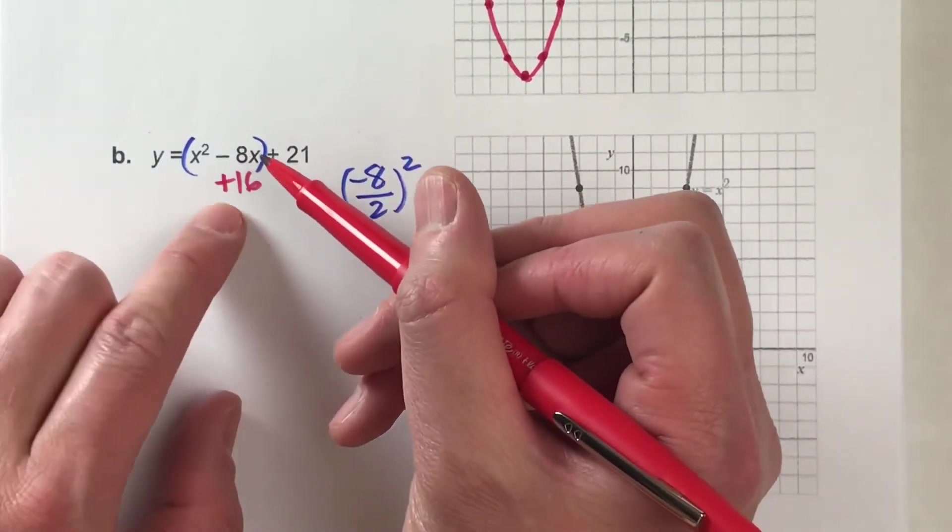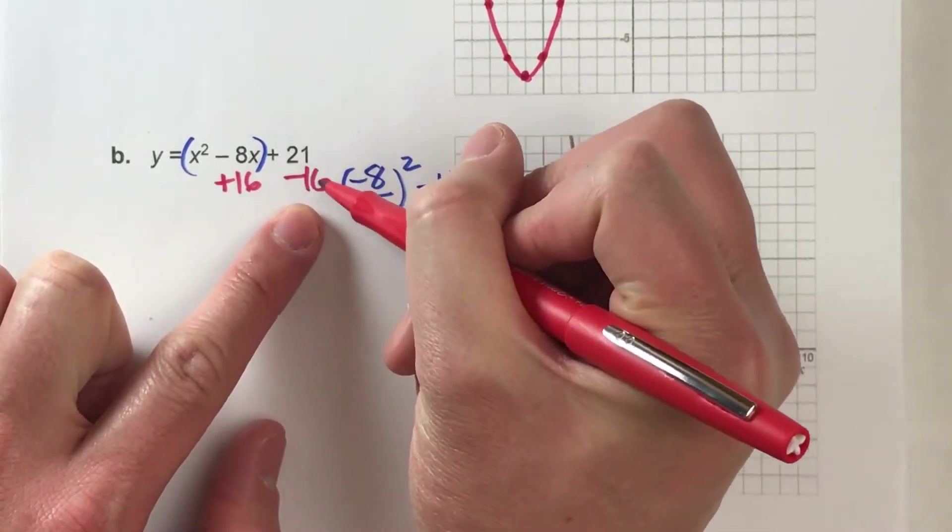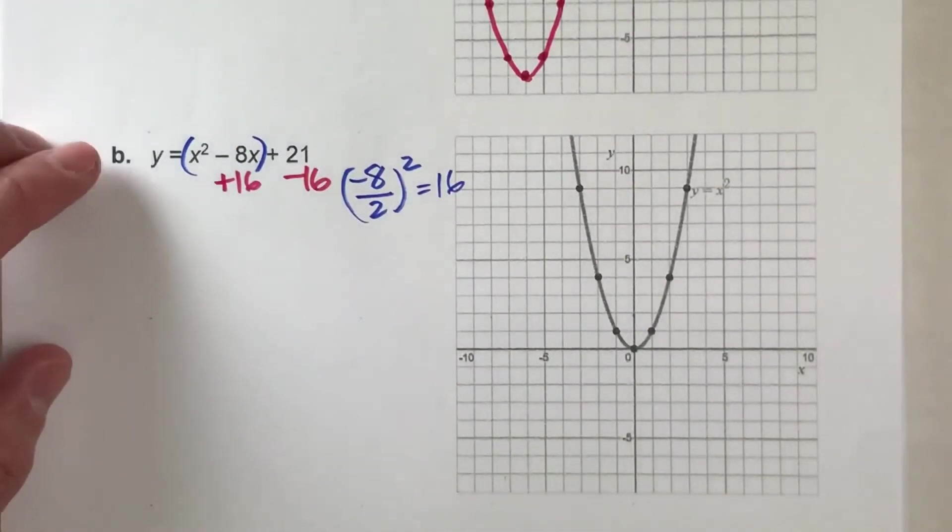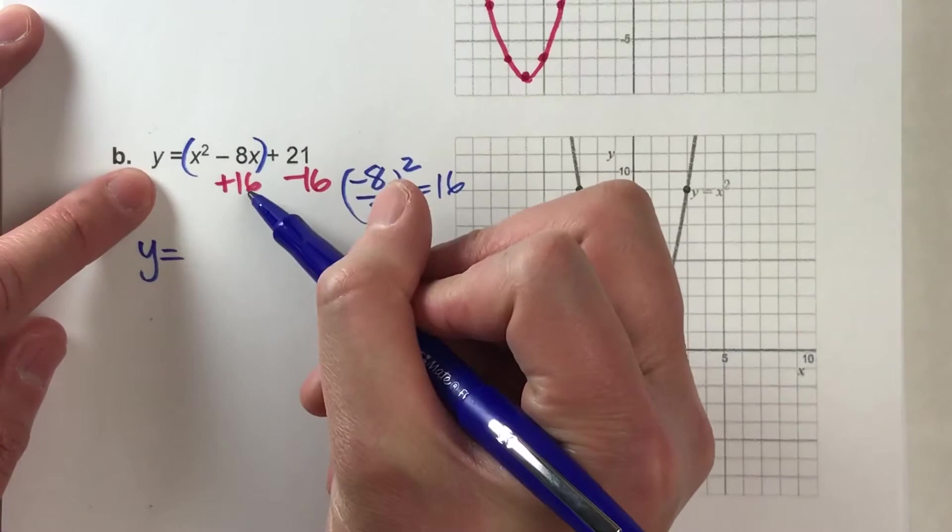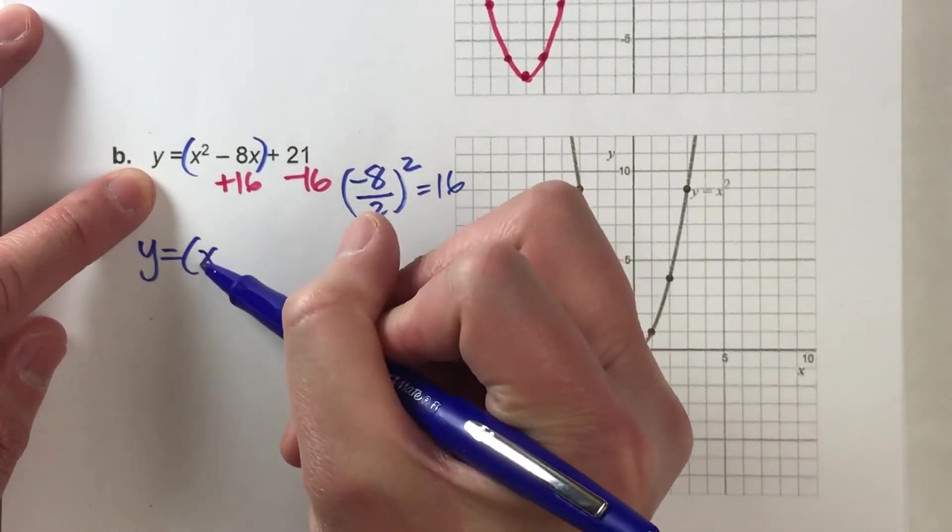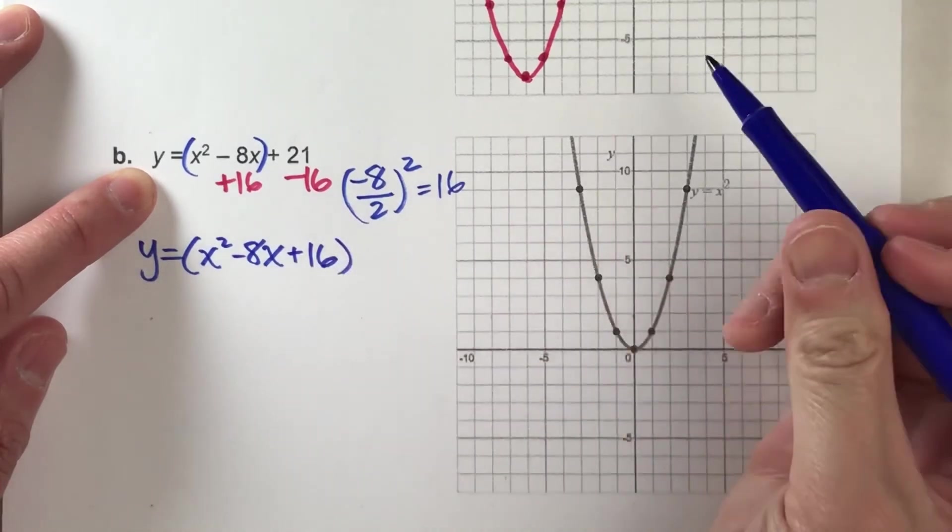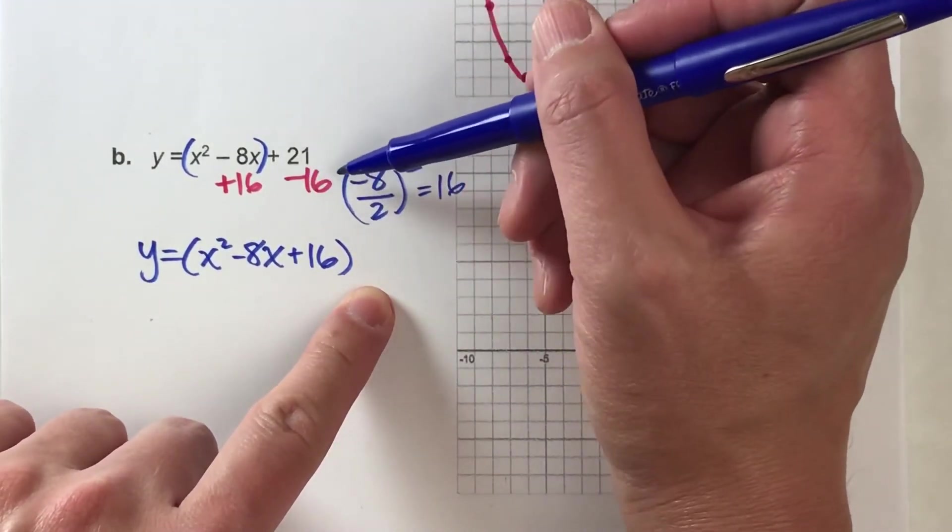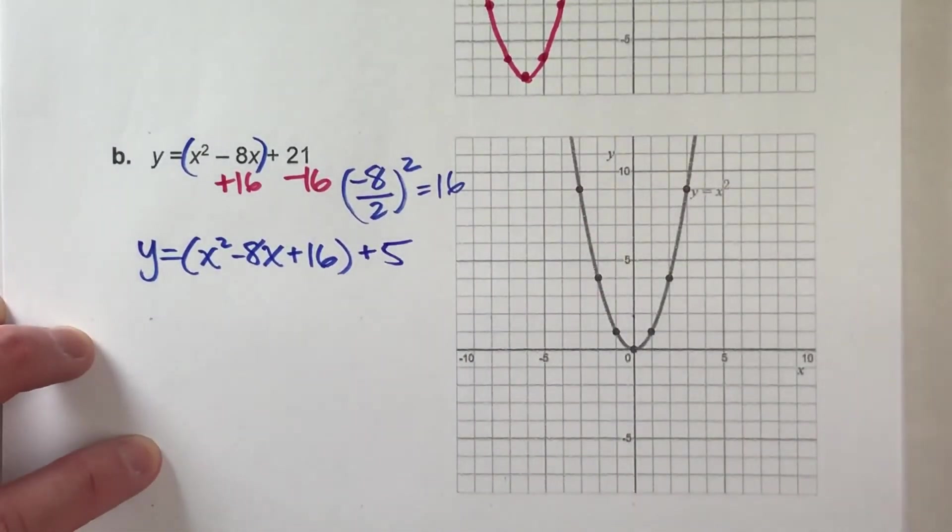So what that tells us is we need to add 16 in here so that this is going to be a perfect square. But again, we can't just add a number to one side of the equal sign to keep it balanced. I'm going to subtract 16 from the same side so that the net difference is 0. So let's simplify what we have here. Y equals, I'm going to keep the 16 in the parentheses with the rest of this stuff so it's a perfect square. And then on the outside, we've got 21 minus 16. And 21 minus 16 is 5, so I'm just going to simplify this to plus 5.